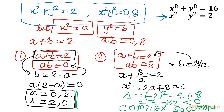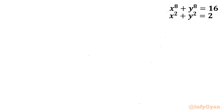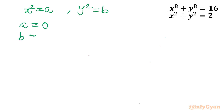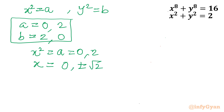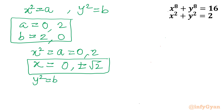From System 1, a = 0 and 2, b = 2 and 0. Substituting back: x² = a gives x = 0 or x = ±√2. Similarly, y² = b gives y = ±√2 or y = 0.